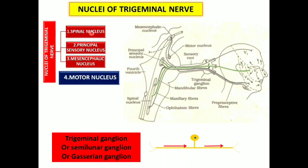The first nucleus is the spinal nucleus, which is located mainly in the pons and also in the medulla, with its lower portion extending to the cervical part of the spinal cord. It is an elongated nucleus distributed throughout the brainstem, medulla, and upper cervical spinal cord — that is why it is called the spinal nucleus. This nucleus receives pain and temperature sensations from the various territories of the trigeminal nerve.